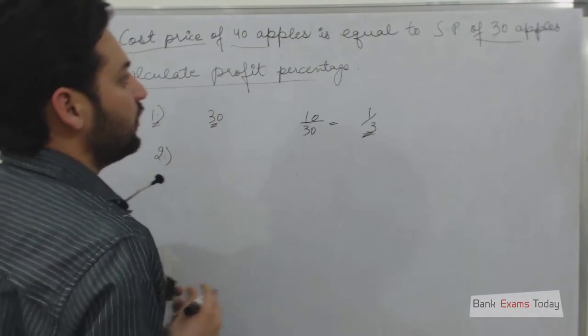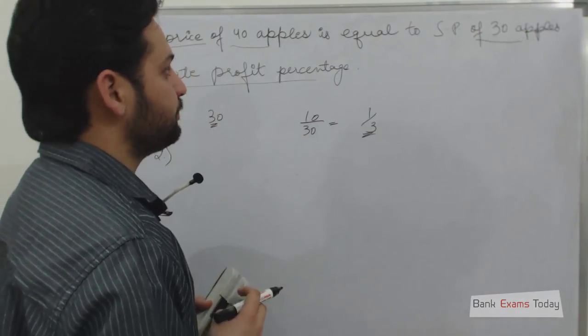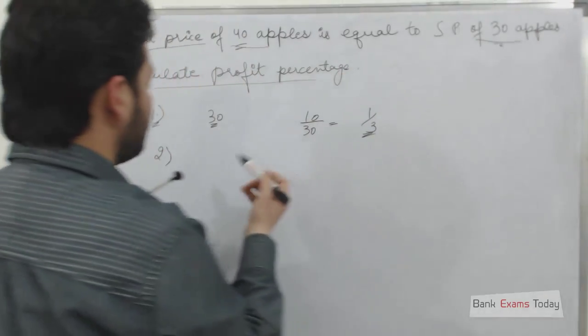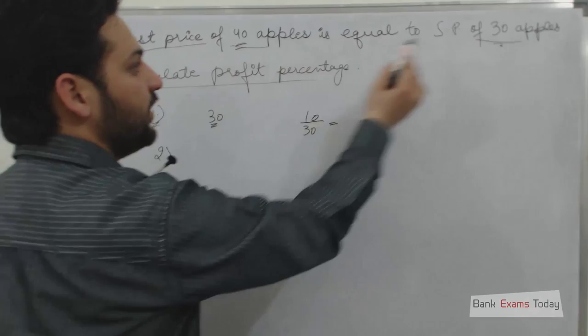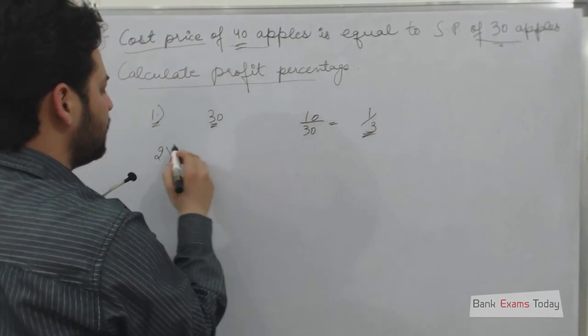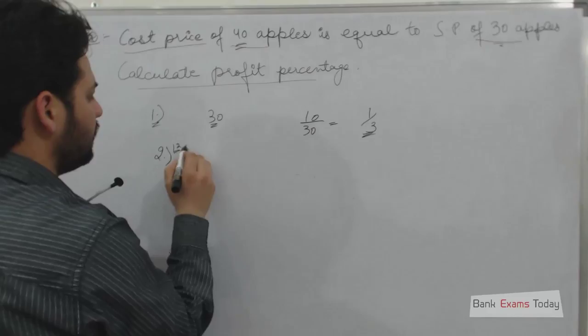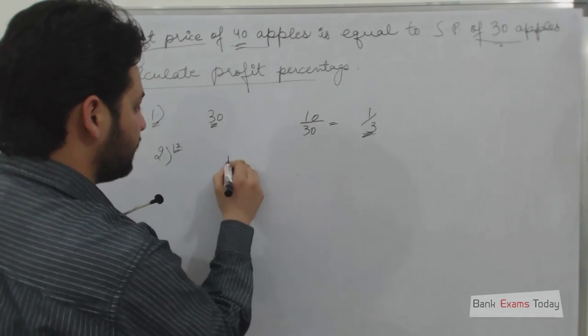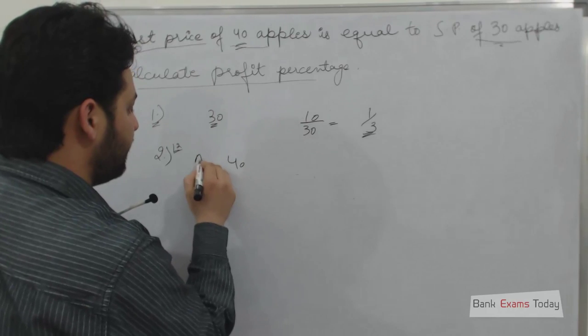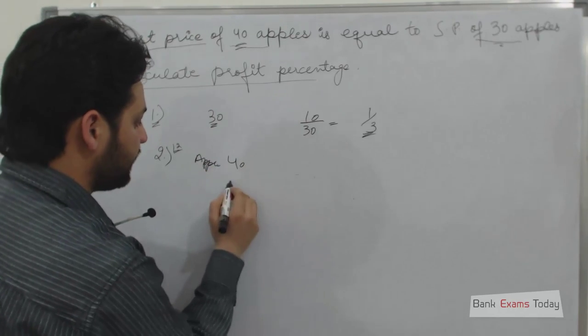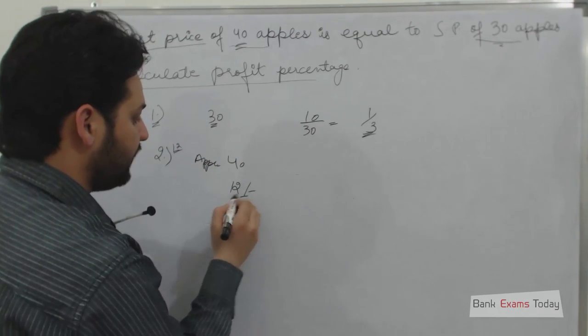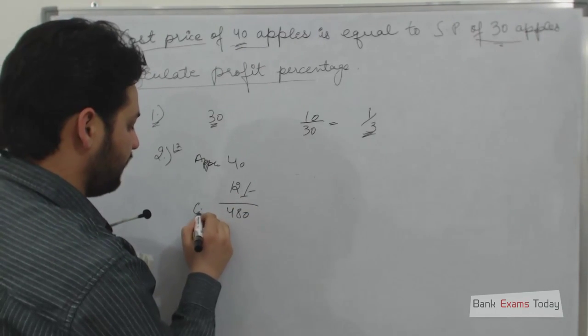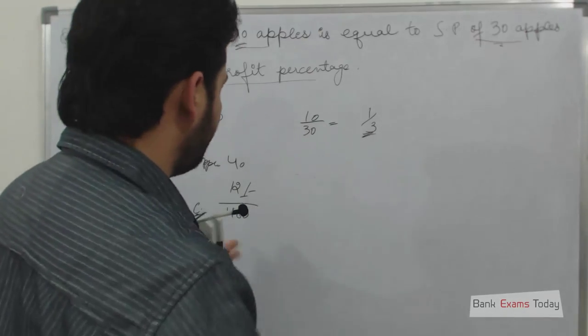The second method is, let's assume, what is the cost? First of all, we will take the LCM, both of these will be 4 and 3. So let's assume that a person buys 40 apples at 12 rupees per apple. So the cost of 40 apples is 480.